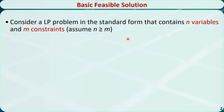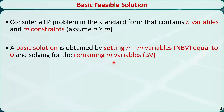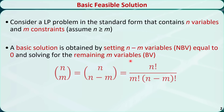Let's consider a linear programming problem in the standard form that contains n variables and m constraints. We assume n is greater than or equal to m. We can get a basic solution by setting n-m variables equal to 0 and solving for the remaining m variables. The n-m variables are called non-basic variables, or NBVs, and the remaining m variables are called basic variables, or BVs. The total number of basic solutions is equal to n choose m, which is n factorial divided by m factorial times n-m factorial.